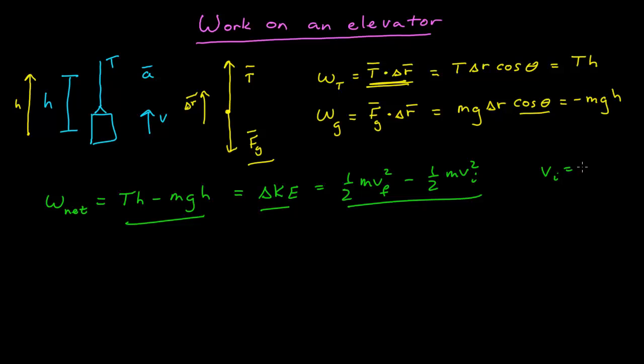We were told that the initial velocity was not rest, it was not zero, it was just some velocity v. So if I solve now for my final velocity, I get my final velocity squared is equal to my initial velocity squared plus 2 over m times the tension times the height minus mg times the height. And I can use this now to solve for v final.